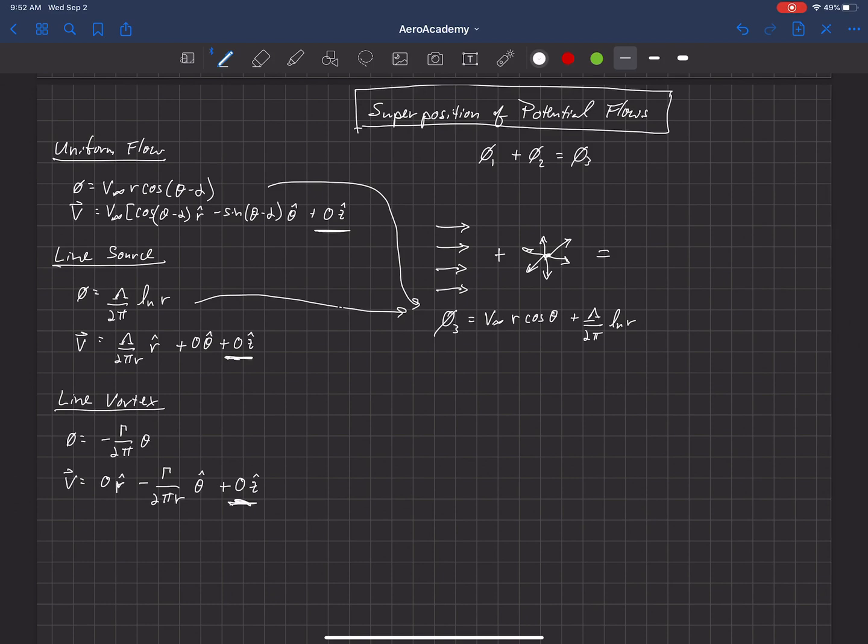Now we could differentiate these to find the velocity. Again, the velocity is just the gradient of phi. But in this case, we can actually just add our two solutions for velocity, v1 and v2, because those are already the differentiation of phi1 and phi2. And so we can just add those together.